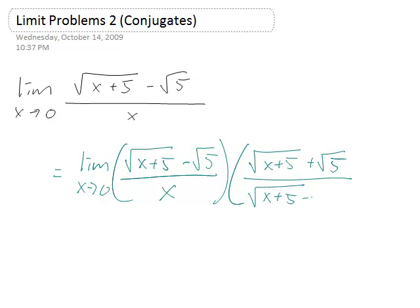Remember, conjugate of an irrational number or a pair of irrational numbers means just write down those irrational numbers and change the sign. So for example, in this one, we have plus signs when we started out with minus signs.